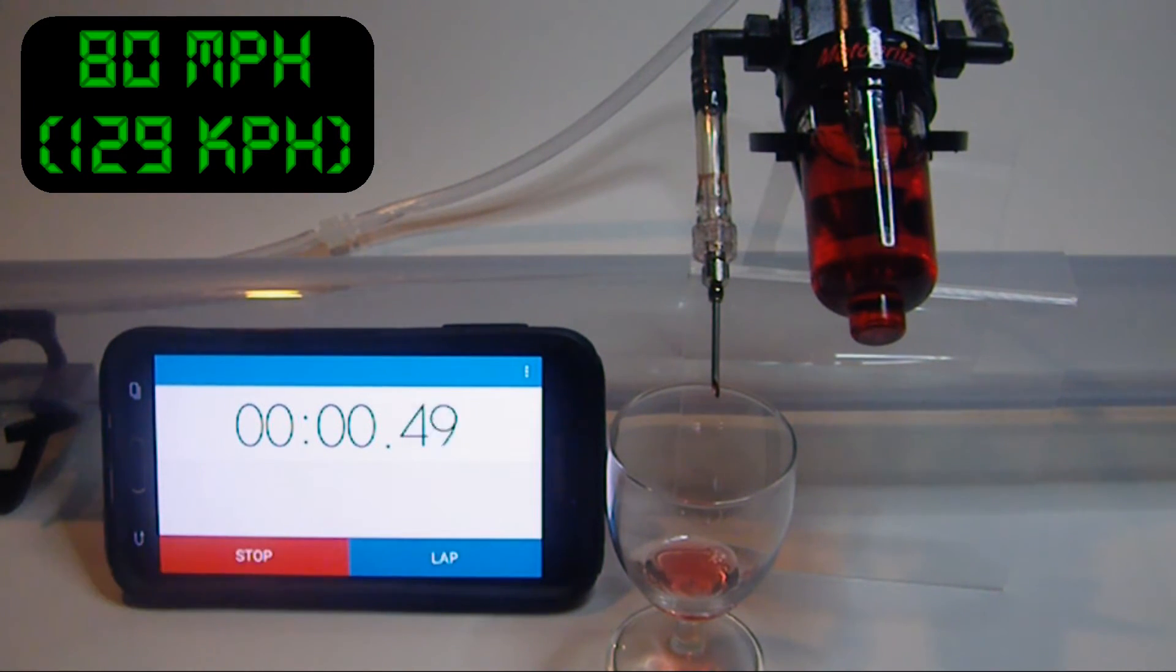So in the second run at 65 miles per hour, there was about one drop every 24 seconds.